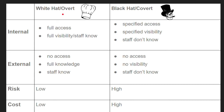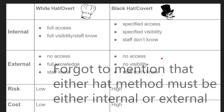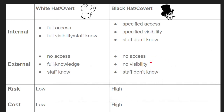With white hat, this is going to be open, fully transparent, fully visible — everybody knows it's happening. That's the internal white hat scenario. With black hat internal, the difference is that you have specified access and specified visibility, and the staff don't know. For black hat external, there's basically no access, no visibility, and staff don't know. With white hat external, there's no access either, but everybody knows about it and there is full knowledge of the system.